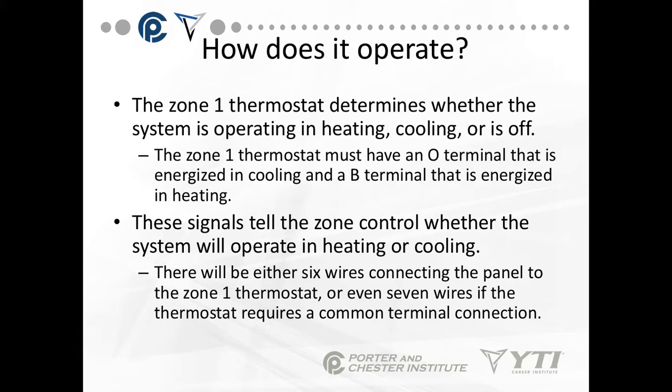How does it work? Zone 1 thermostat determines whether the system is operating in heating, cooling, or is off. The Zone 1 thermostat must have an O terminal that is energized in cooling and a B terminal that's energized in heating. The O terminal is always energized in cooling; the B terminal is energized in heating. Don't get the two confused. These signals tell the zone control whether the system will operate in heating or cooling.